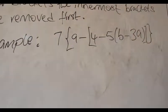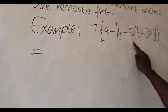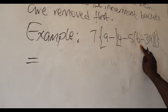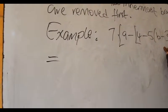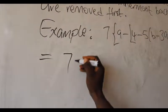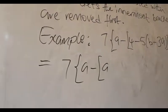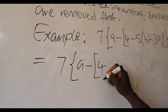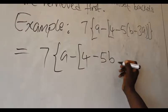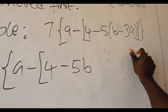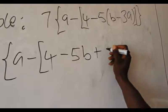Let's solve it out. That will be equal to 5 minus 5 times b, minus 5 times b, and also minus 5 times minus 3a. So we have 7 into a minus 4. Minus 5 times b gives us minus 5b, and minus 5 times minus 3a — because minus times minus is plus — gives us plus 15a.